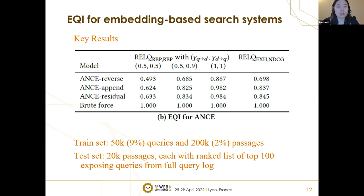Here are the key results. For the training set we use only 9% of queries — 50K — and 2% of passages — 200K. The brute force is the same as BM25, with 100% accuracy. The ANCE-reverse baseline performs a K-nearest neighbor search in the original embedding space, and performs poorly when the user model is less patient. The append and residual models have much better performance compared to this baseline. The test set is 20K passages not included in the 200K training passages, with their top 100 exposing queries extracted from the full query log.